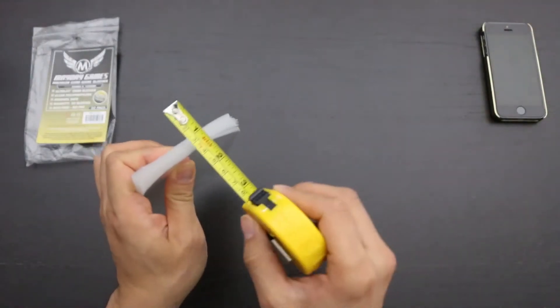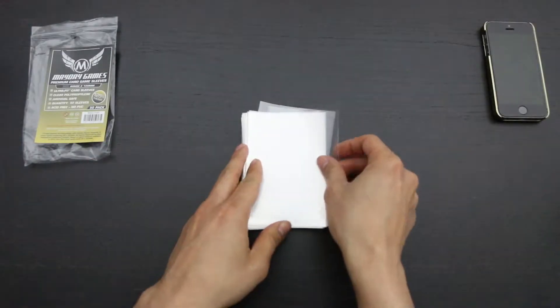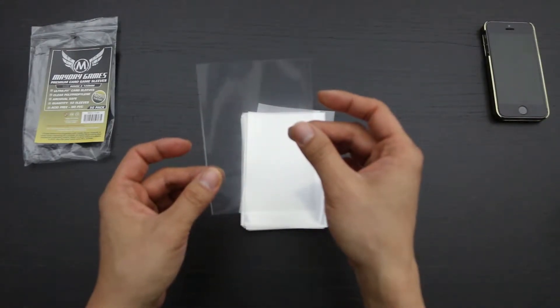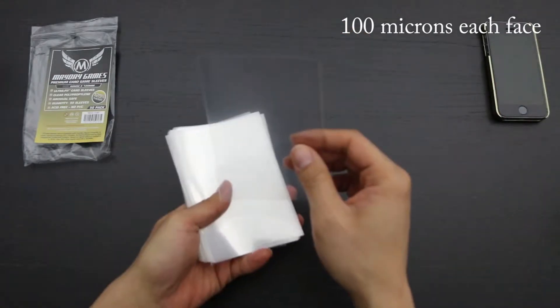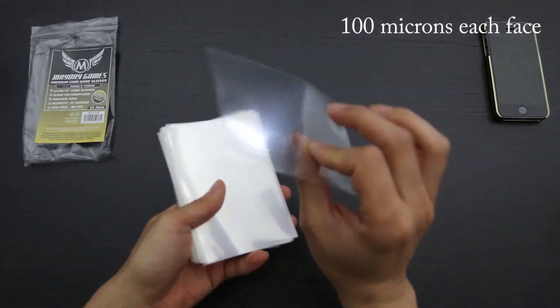Now, let's check the thickness. These sleeves are 1cm thick which means that each sleeve is 200 microns thick or 100 microns each face, which is the standard for most thicker, more rigid sleeves.